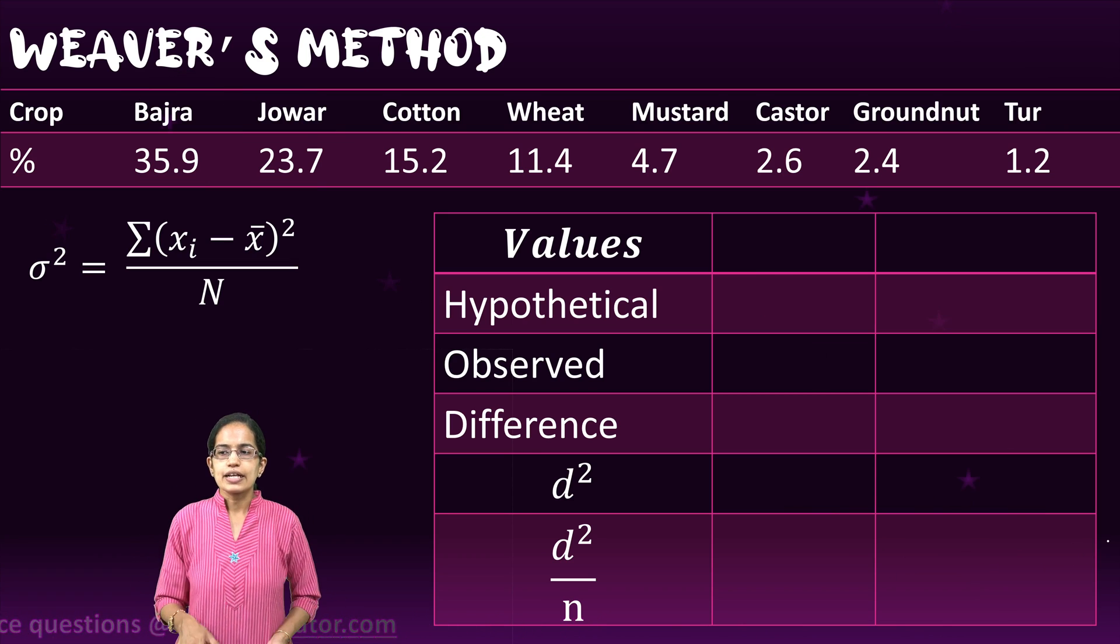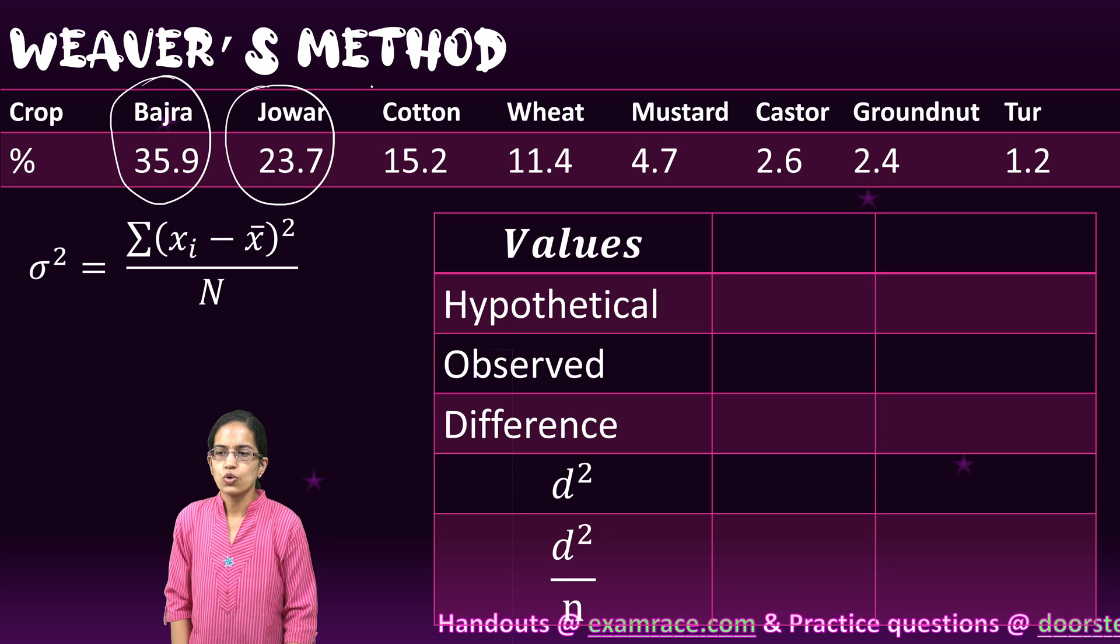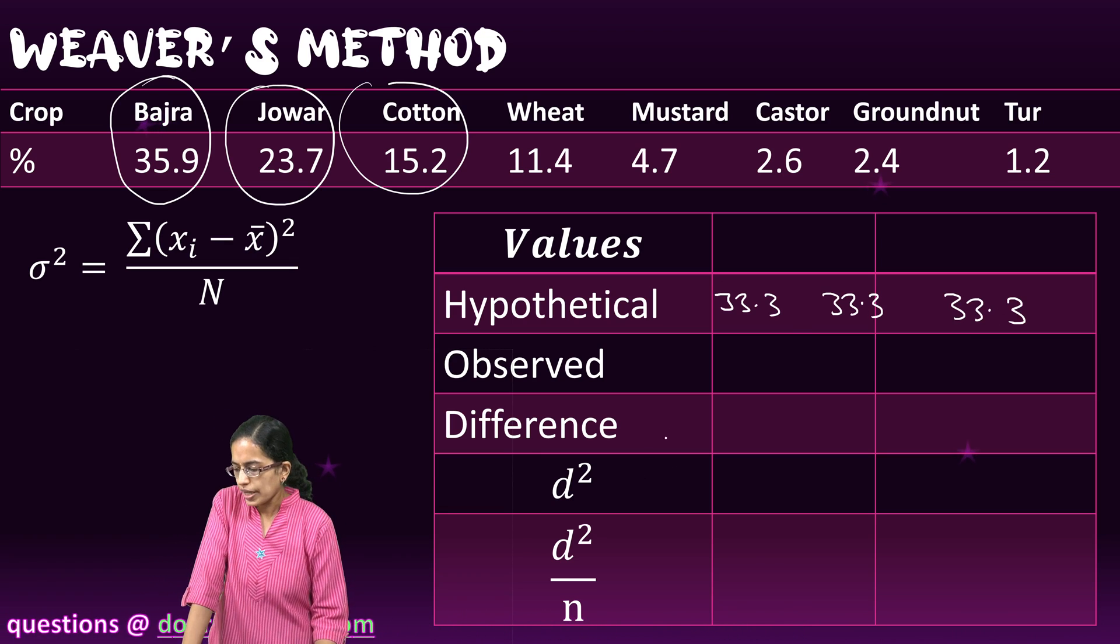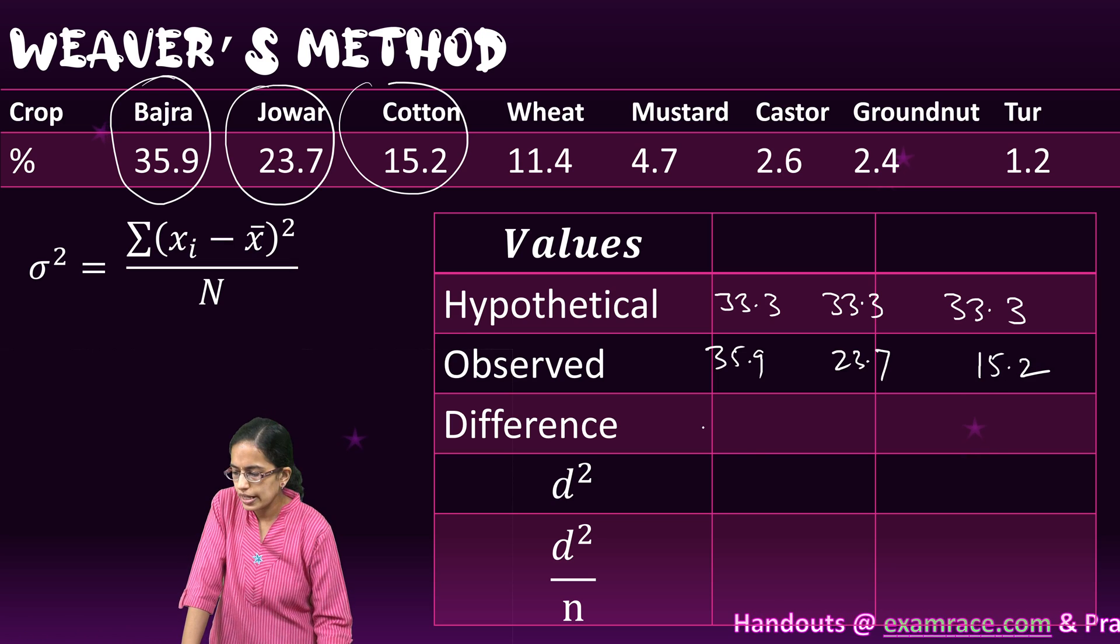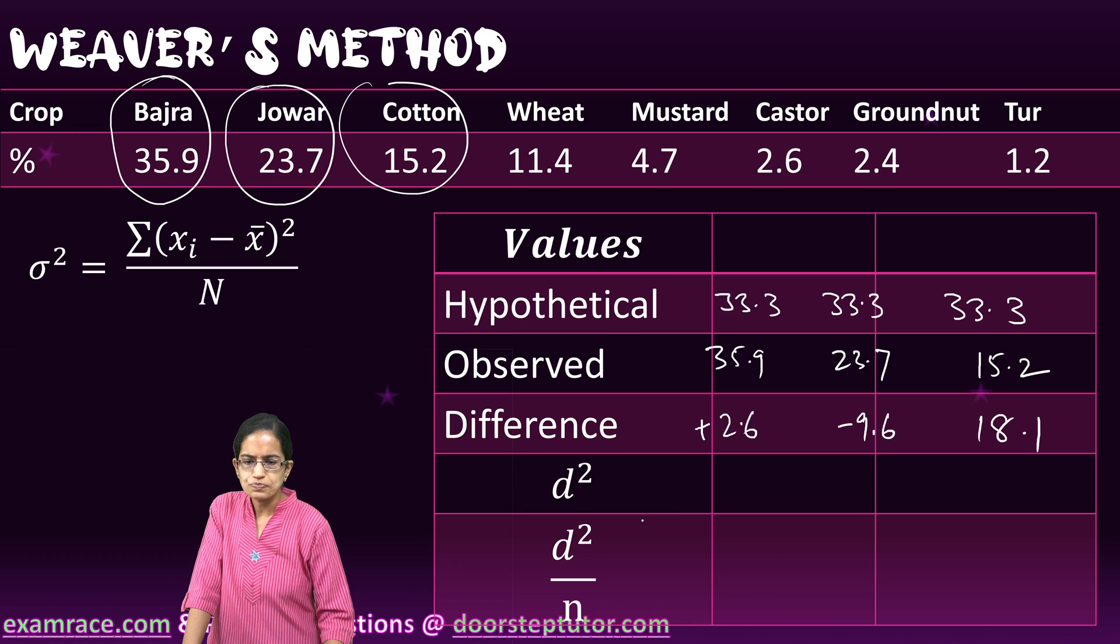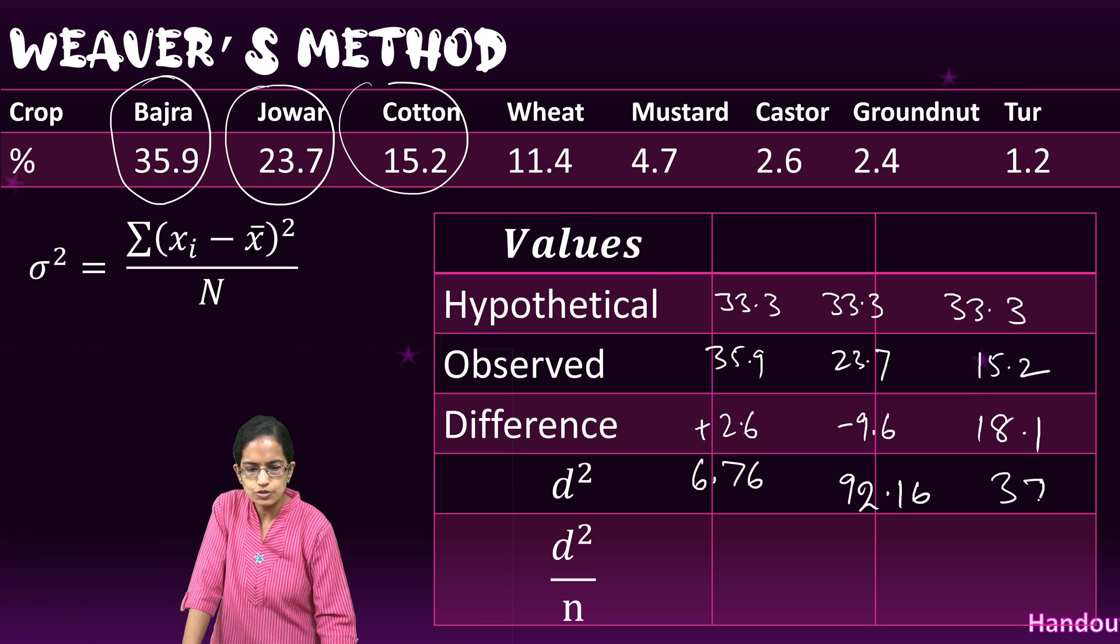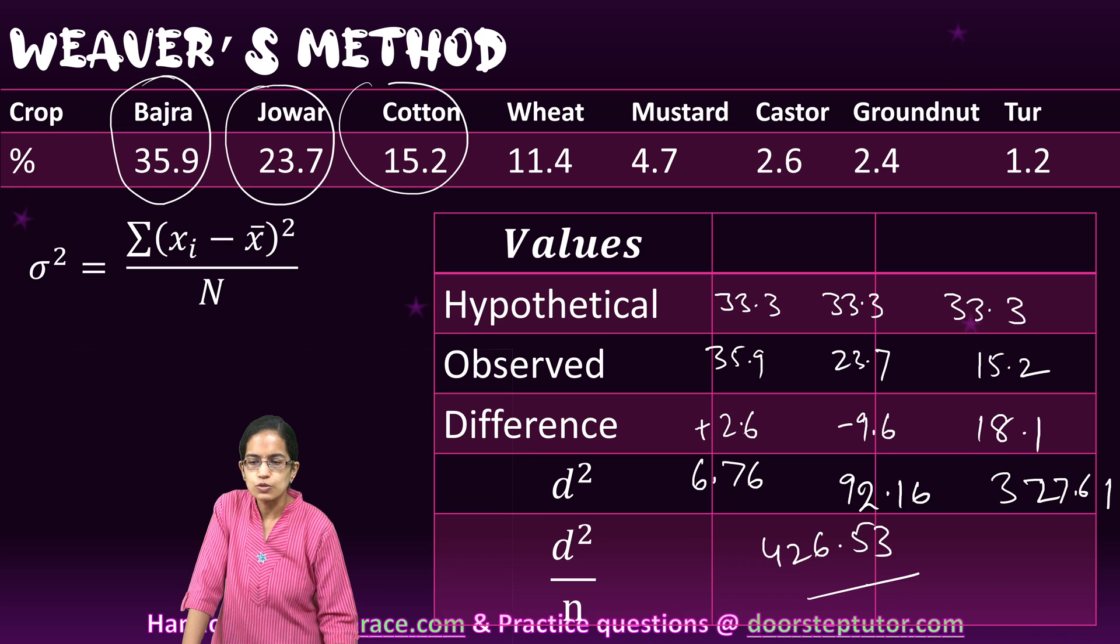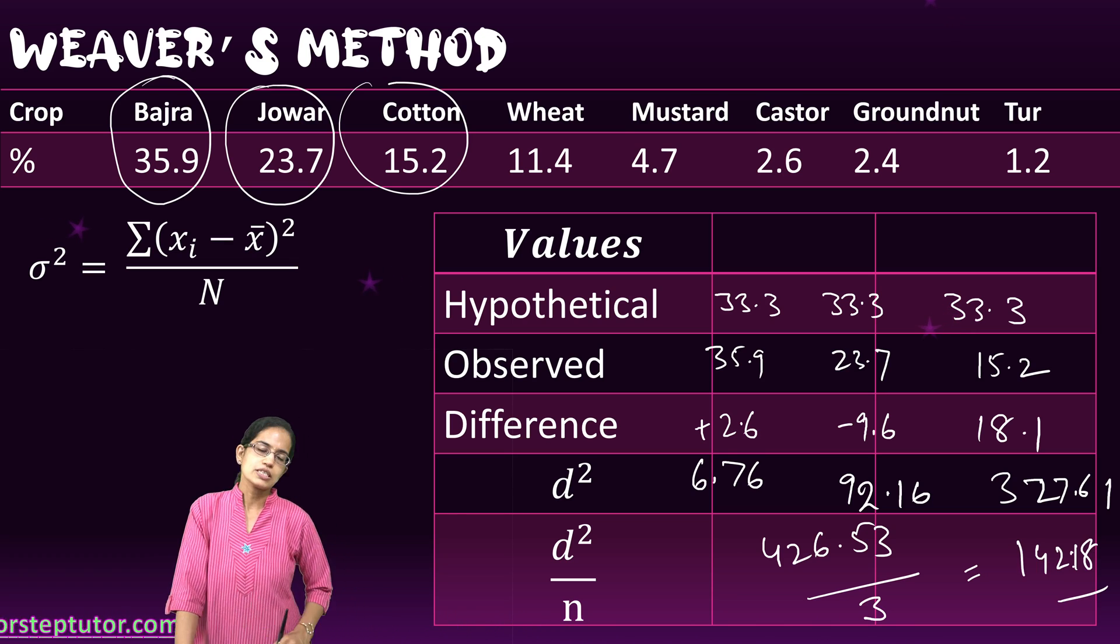I move forward. I take three crops. The same problem is being solved. I am now considering three crops: Bajra, Jowar, and Cotton. I give a weightage of 33.3, 33.3, and 33.3 to all these crops. When I give this weightage, I take the difference. My values are 35.9, 23.7, and 15.2. I take the difference as plus 2.6, minus 9.6, and 18.1. I square these differences which is 6.76, 92.16, and then 27.61. I add these as 426.53. I divide it by the total number of crops I have taken, so 3 crops. I divide it by 3, I get a value of 142.18.